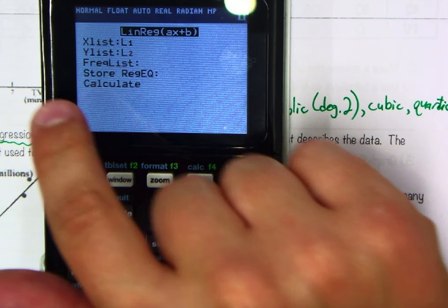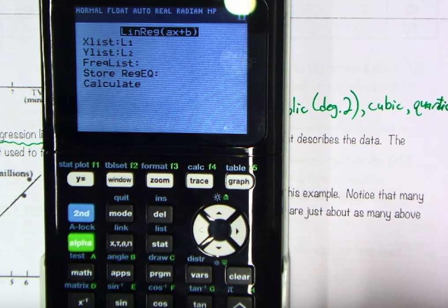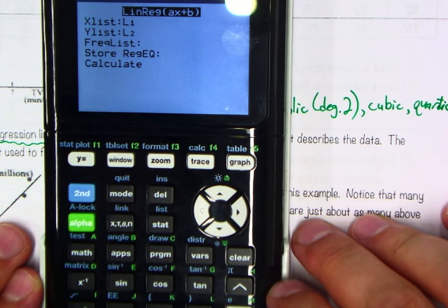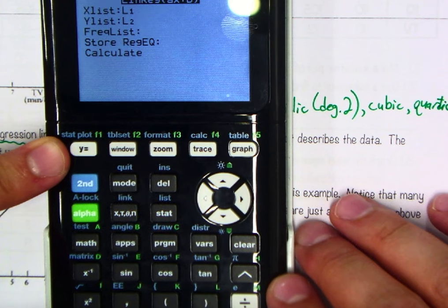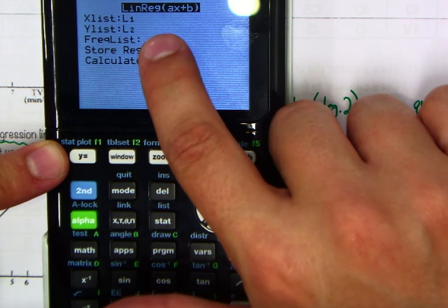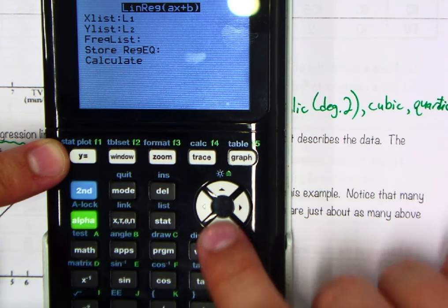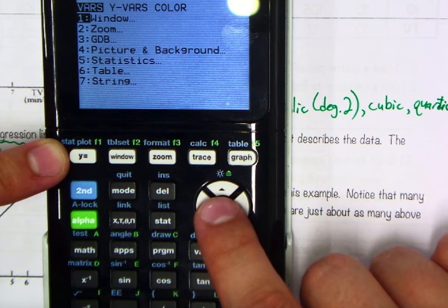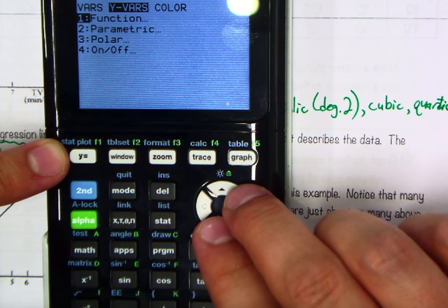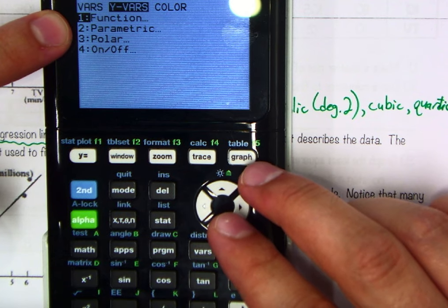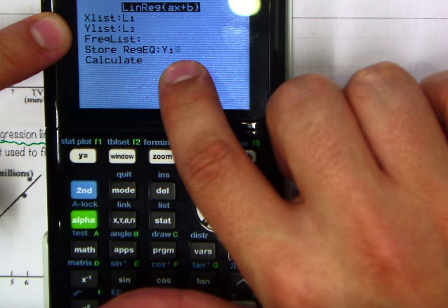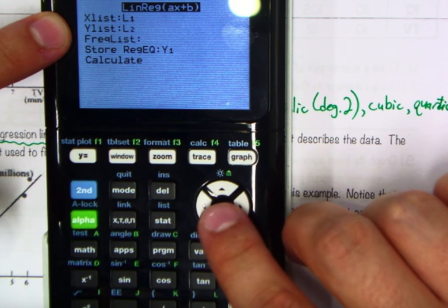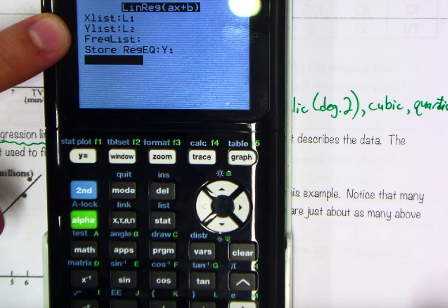And finally, store the regression equation. We do want to do this so that I don't have to type it all in. There's a nice way to go about this. I want to store it in my y equals list. It's about to come up with a line in the form ax, y equals ax plus b, so if I hit variables and go right one, you'll notice it says y variables function. Hit enter, and now I can store this as y1 in my y list. Now before we go anywhere, hit calculate, enter.